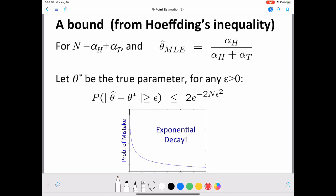In this video we will look at Hoeffding's inequality. Hoeffding's inequality gives you a theoretical bound for committing a mistake in your MLE calculation. So here we have to define two things: one is the bound and the other is the mistake itself.